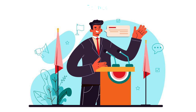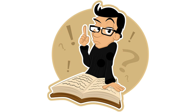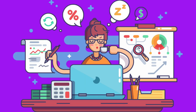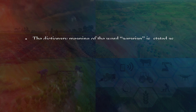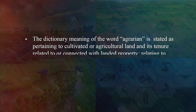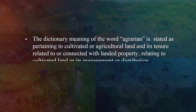The concept of agrarian structure is multidimensional, studied by political scientists, historians, sociologists, and social anthropologists from different perspectives like productivity, development, technology, political movements, stratification, class structure, and so on. The dictionary meaning of the word agrarian is stated as pertaining to cultivated or agricultural land and its tenure, related to or connected with land property, relating to cultivated land or its management or distribution. The term structure has different connotations.